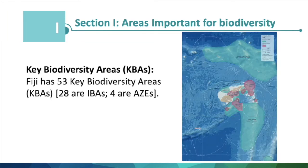Looking at areas important for biodiversity, key data is available on key biodiversity areas, gathered from the UN Biodiversity Lab. Fiji, for example, has 53 key biodiversity areas — 28 are IBAs and 4 are AZEs.